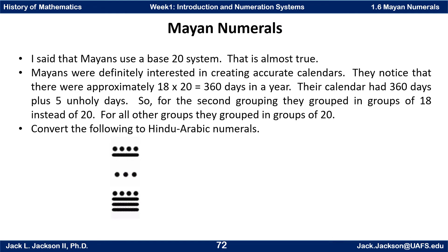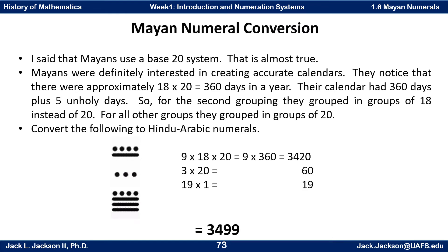So convert that one to Arabic numerals. Starting at the bottom: five, ten, fifteen, sixteen, seventeen, eighteen, nineteen singles. Moving up: one, two, three groups of twenty, or sixty. Then five, six, seven, eight, nine groups of eighteen groups of twenty — in other words nine groups of three hundred sixty, which is three thousand four hundred twenty. Add those up and you get three thousand four hundred ninety-nine in Hindu-Arabic numerals.